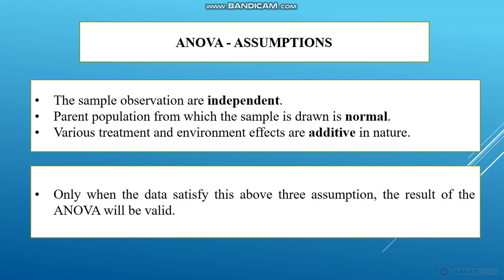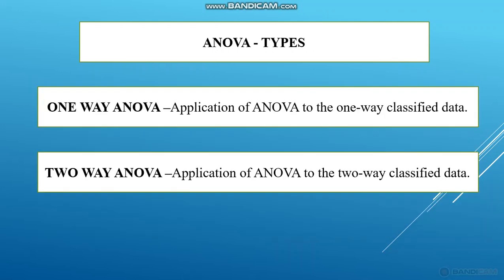Only when the data satisfies these three assumptions will the result of ANOVA be valid. So first, we want to check whether the data satisfies these three assumptions. If it does, the result of ANOVA will be good. The three basic assumptions are: sample observations are independent, the parent population is normally distributed, and treatment and environmental effects are additive in nature.